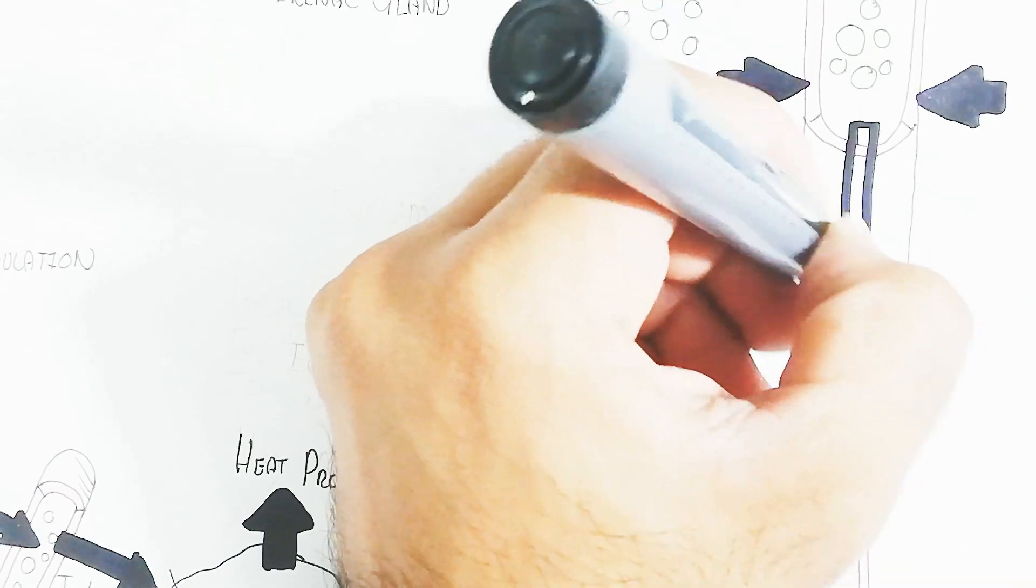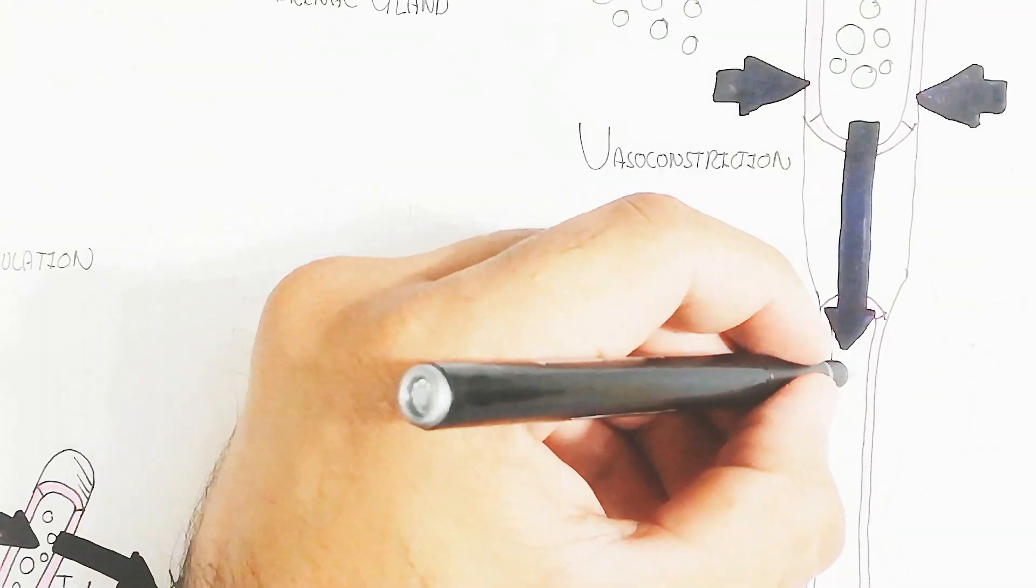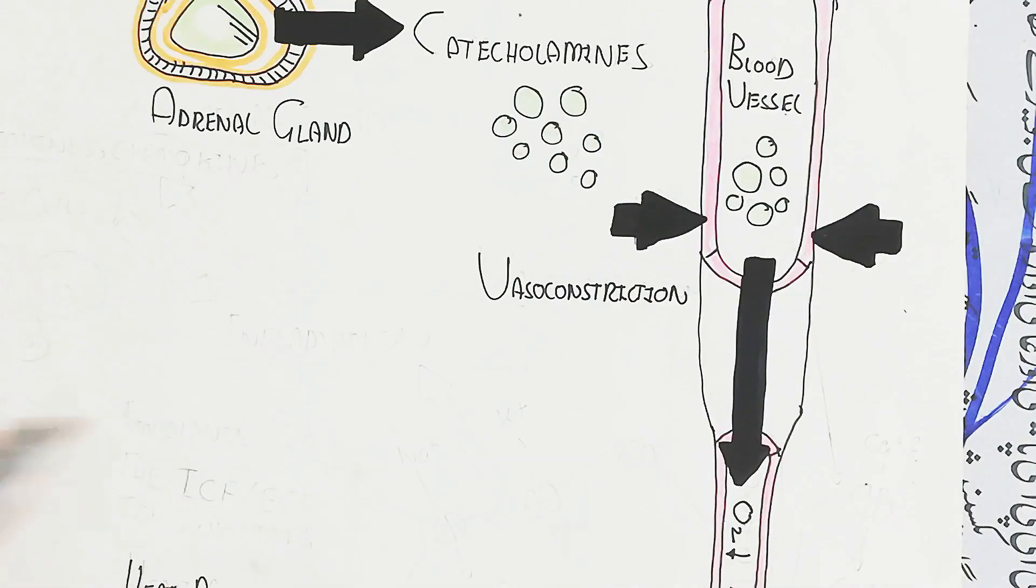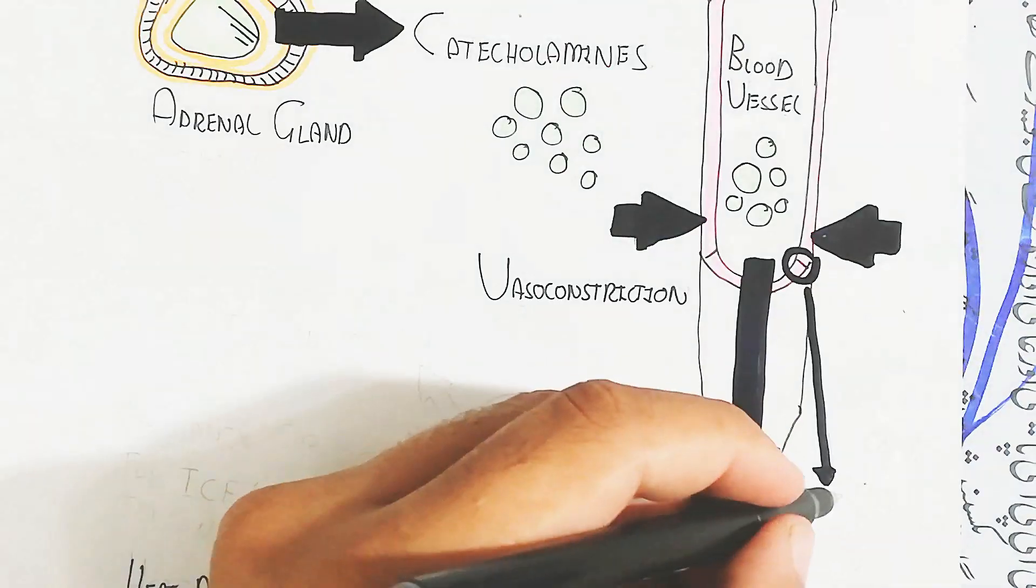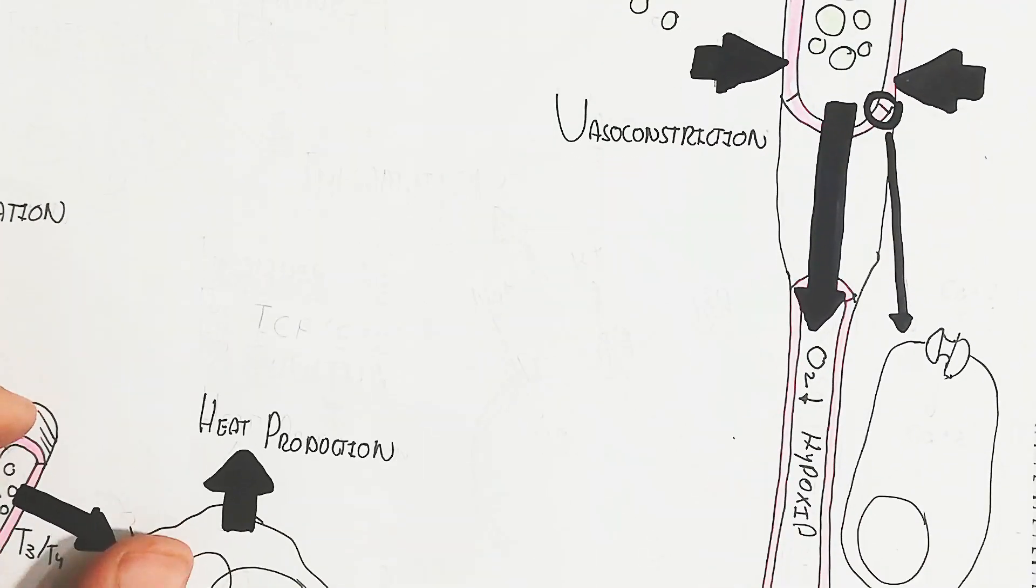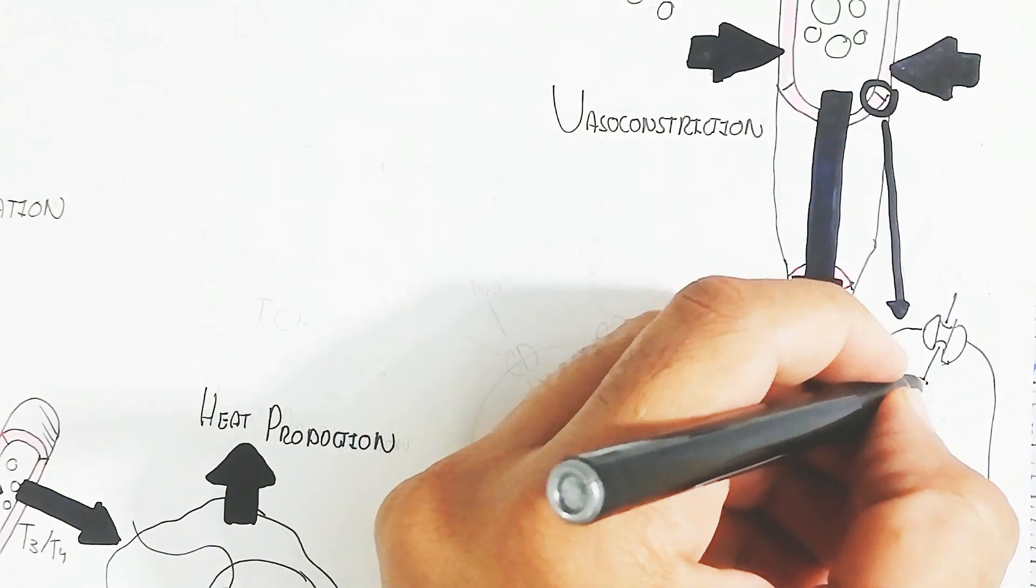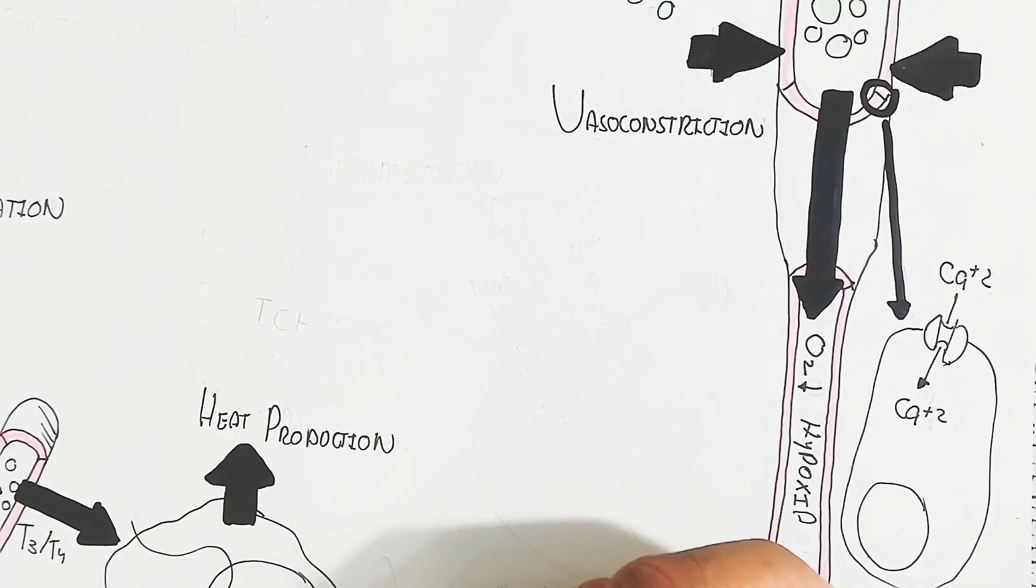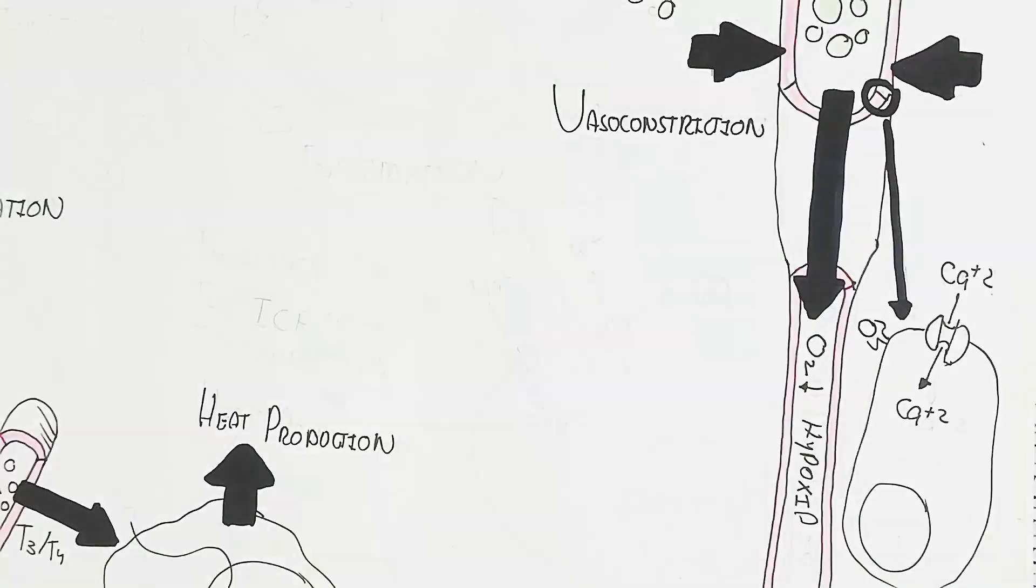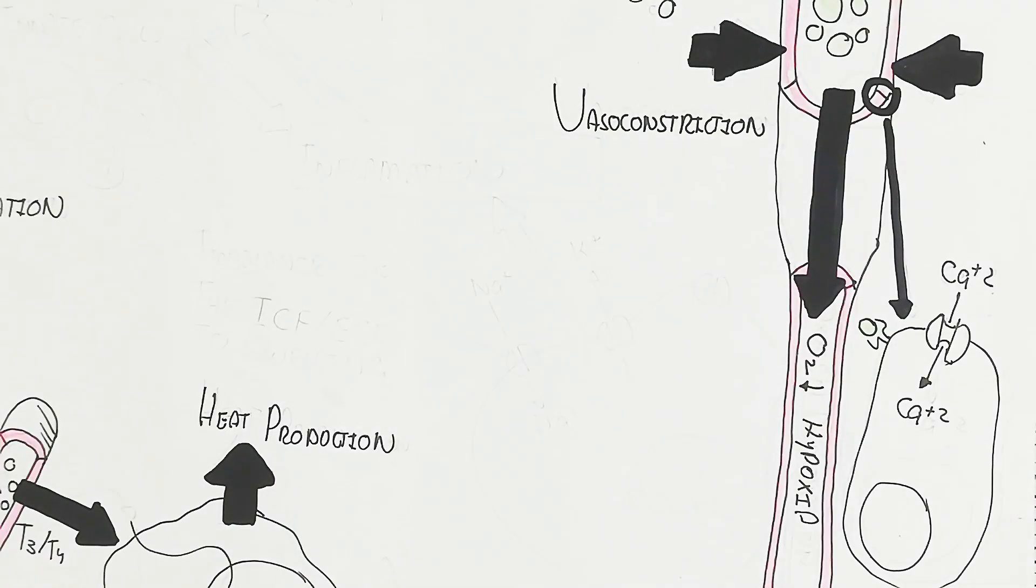This is not any problem in regard to death. So the hypoxia will occur when the vasoconstriction. In this way, the smooth muscle constriction due to the catecholamines, the epinephrine and norepinephrine, for smooth muscle of the blood vessel will constrict due to calcium increase.